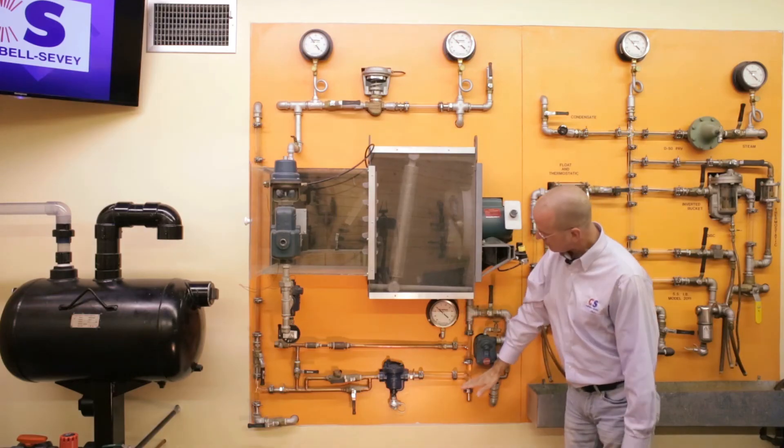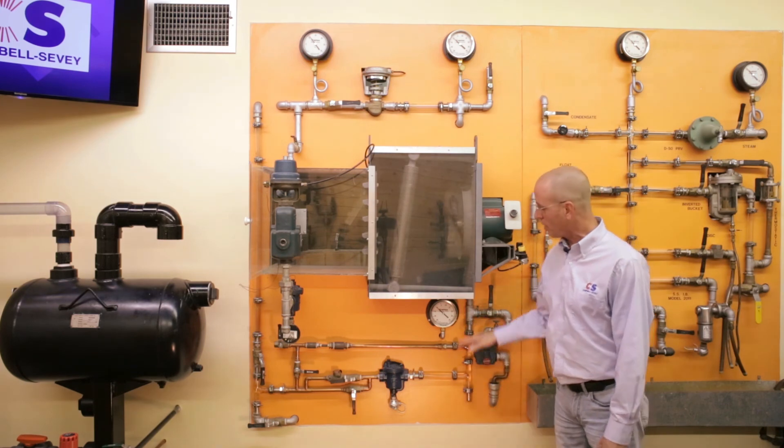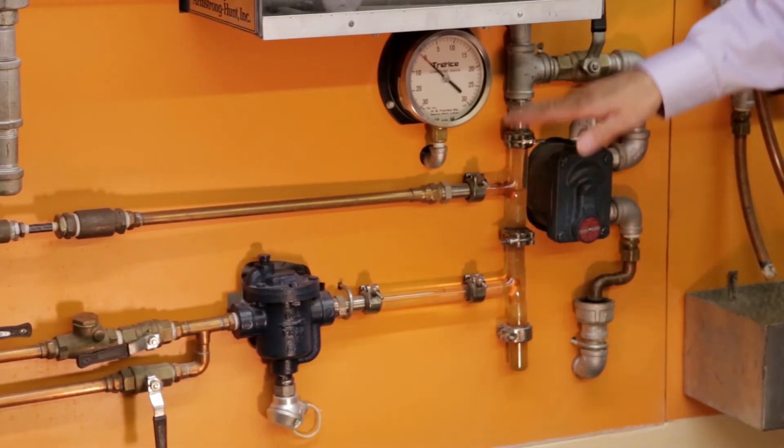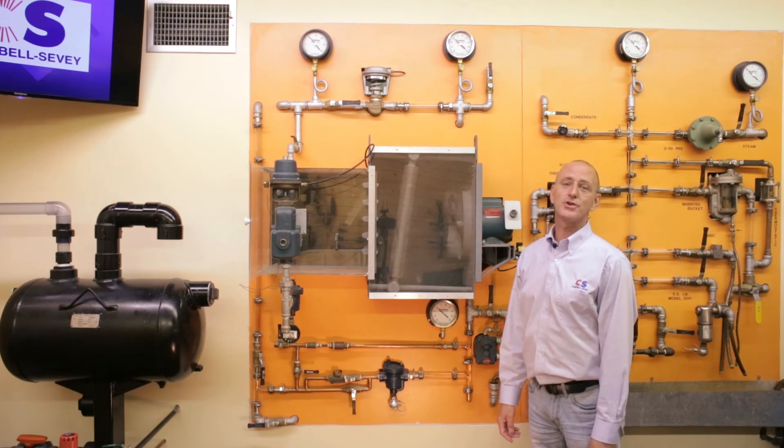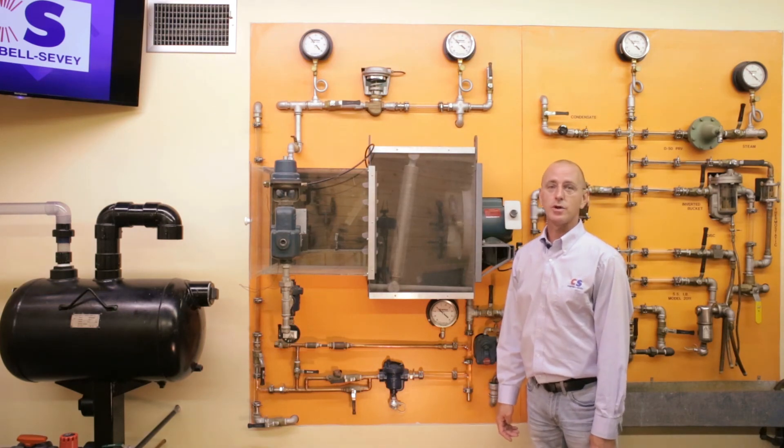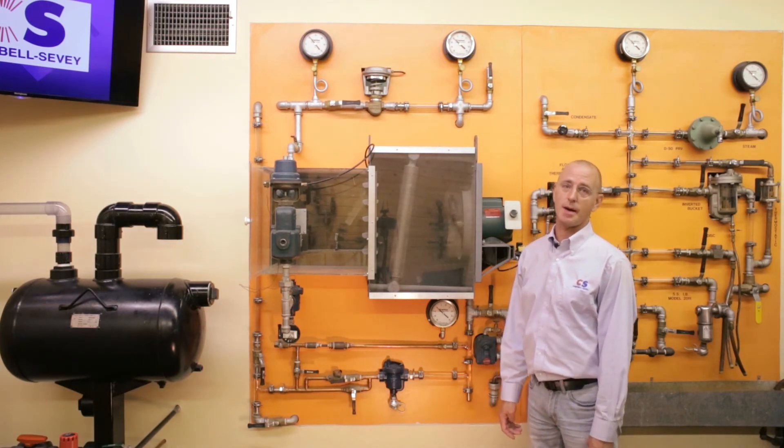Now if we mount our trap 14 to 18 inches below our coil, we can always make sure that we generate positive pressure. Proper installation of a vacuum breaker will ensure that we have positive drainage under all operating conditions.